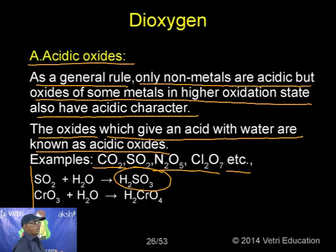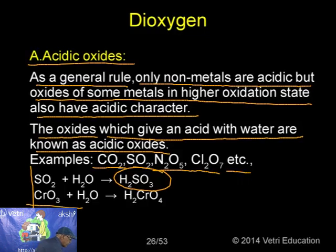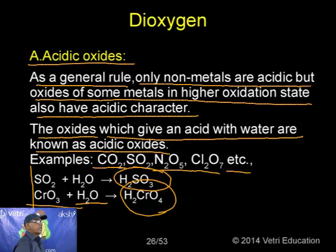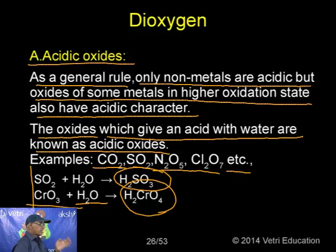The same Al₂O₃ also reacts with 6 moles of NaOH in the presence of 3 moles of water to produce the complex sodium hexahydroxoaluminate(III) — behaving as an acidic oxide here. So aluminium oxide reacts with HCl showing basic character and with NaOH showing acidic character, confirming it is an amphoteric oxide.